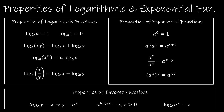On the logarithmic side: the log of a product can be separated using addition to expand, and division uses subtraction. Moving an exponent out front is another key property. Log base a of a equals 1, just as the natural log of e equals 1. For exponentials: a to the zero equals 1; multiplying same-base terms means adding exponents; dividing means subtracting; and a to the x to the y power equals a to the x times y.